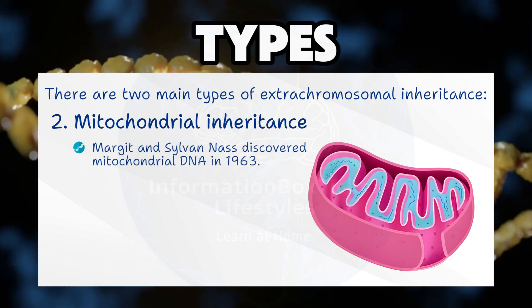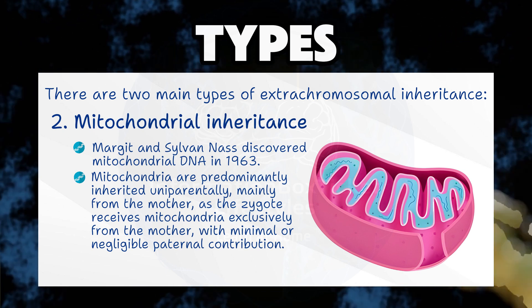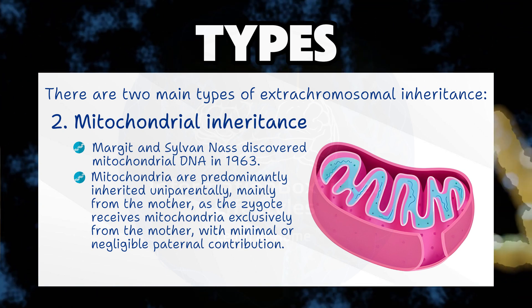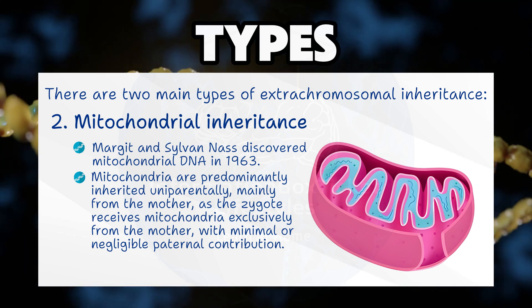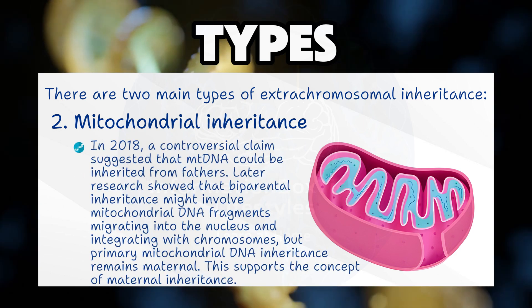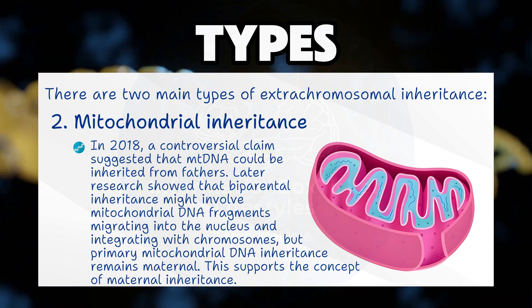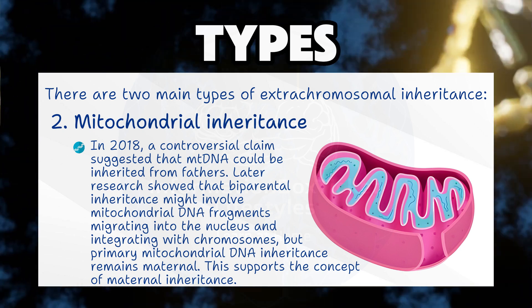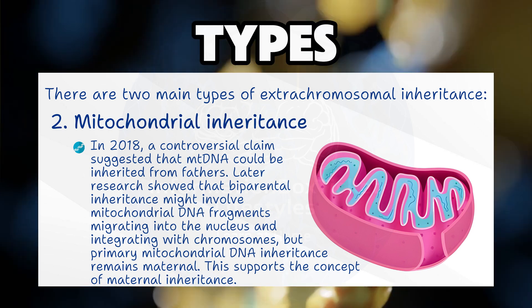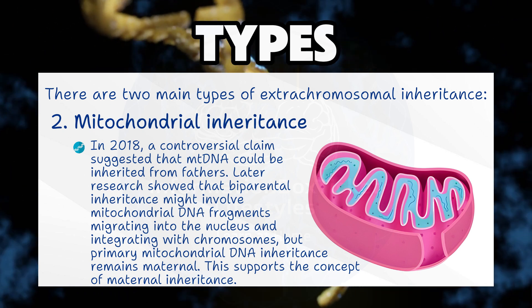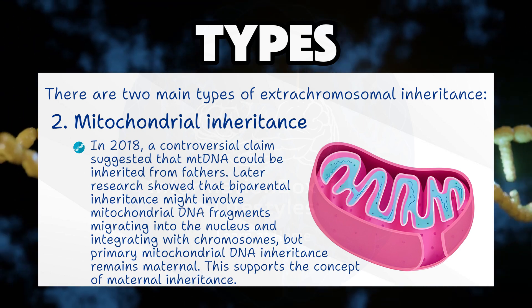Margit and Sylvan Nass discovered mitochondrial DNA in 1963. Mitochondria are predominantly inherited uniparentally, mainly from the mother, as the zygote receives mitochondria exclusively from the mother with minimal or negligible paternal contribution. In 2018, a controversial claim suggested that mitochondrial DNA could be inherited from fathers. Later research showed that biparental inheritance might involve mitochondrial DNA fragments migrating into the nucleus and integrating with chromosomes, but primary mitochondrial DNA inheritance remains maternal.